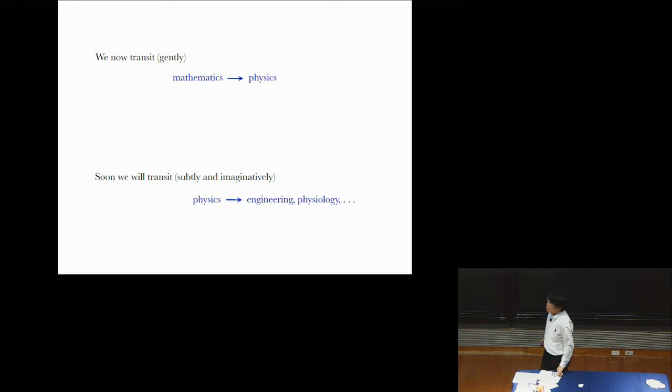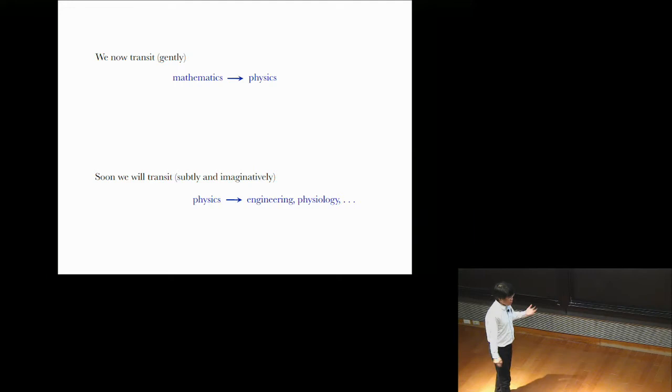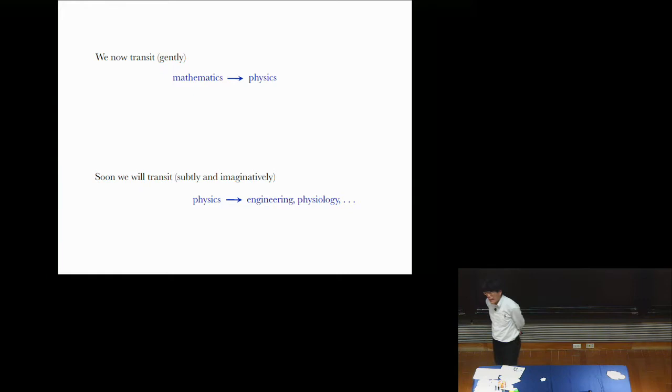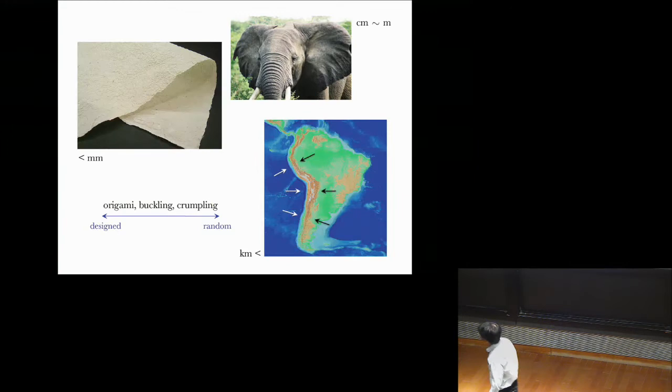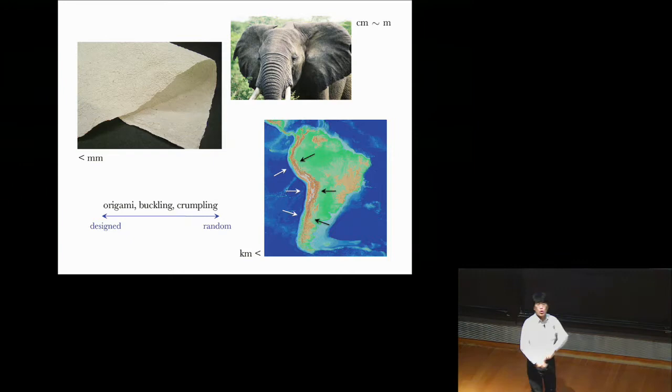Good. So far, we have been speaking about mathematics and maybe geometry in particular. But soon, gently, we shall start a transition towards physics, from mathematics to physics. And then afterwards, we'll rather subtly and imaginatively make a transition further afield into engineering and physiology and so on. We have to expand our fields of investigation. We must, because the phenomena that we're talking about, they come under various names, depending on whether they're deliberately made or randomly generated by nature: origami, buckling, and crumpling, and so on, exist at all scales everywhere in a luxuriant diversity throughout nature.